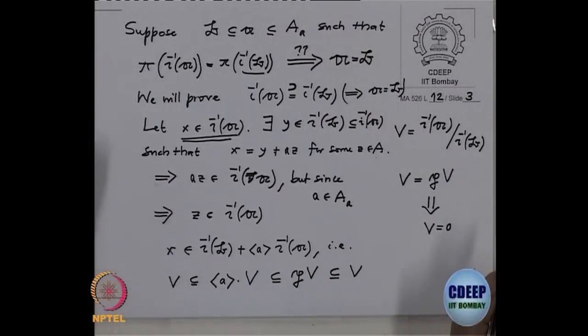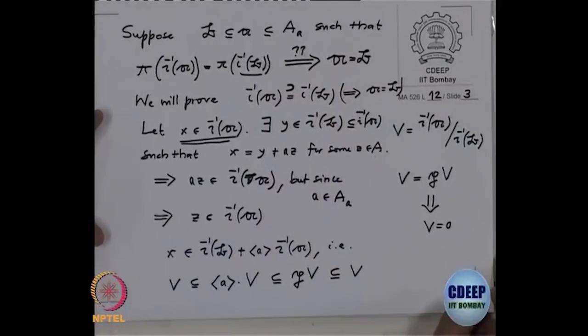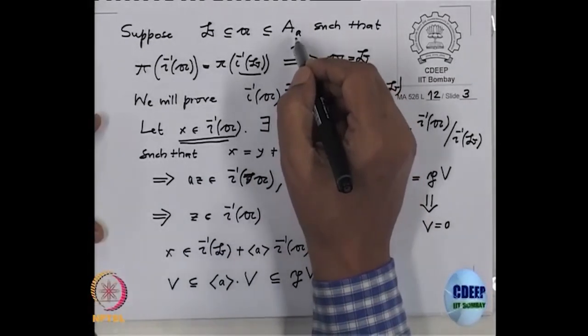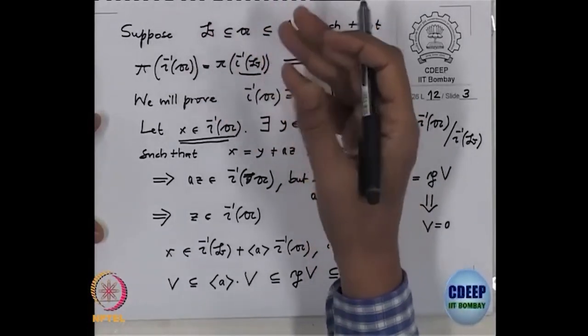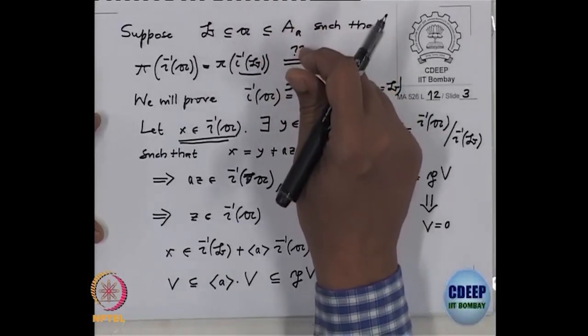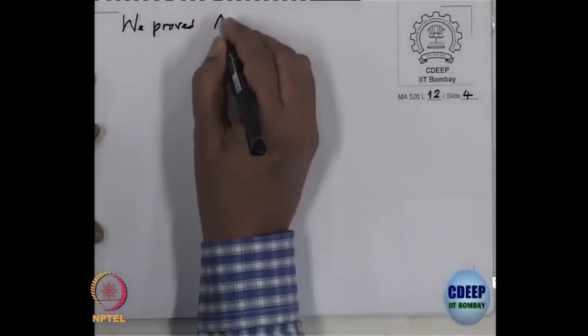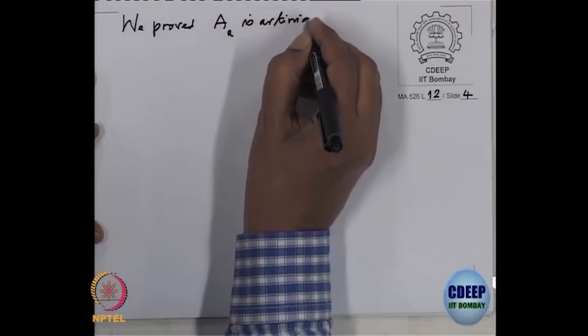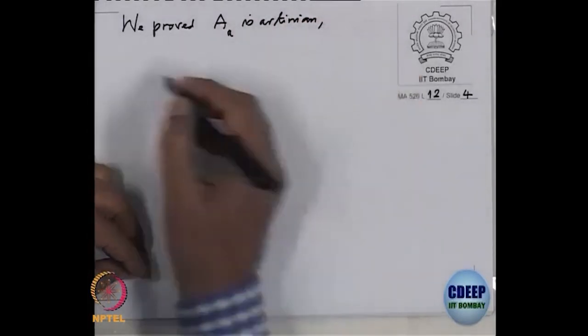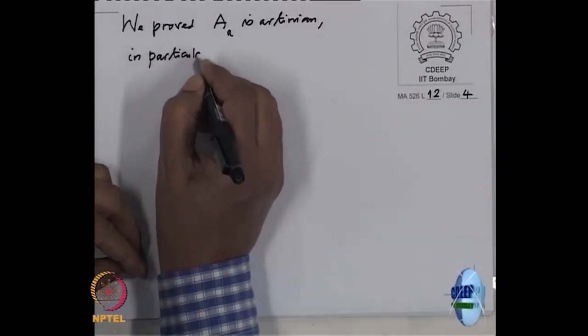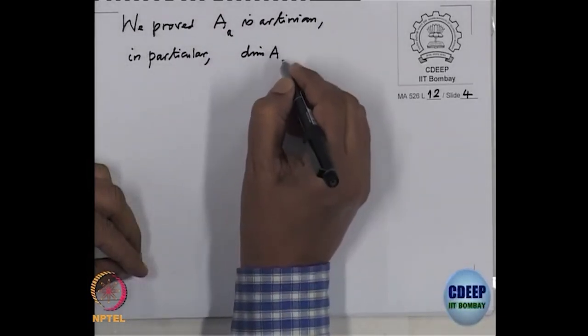So we have proved that A_a is Artinian. Note that it could be that ι⁻¹(A) is the zero ring — we have no evidence to exclude that. To conclude it is non-zero, we need to check that a is not nilpotent. In any case, we have proved that A_a is Artinian. In particular, the dimension of A_a is less than or equal to 0.